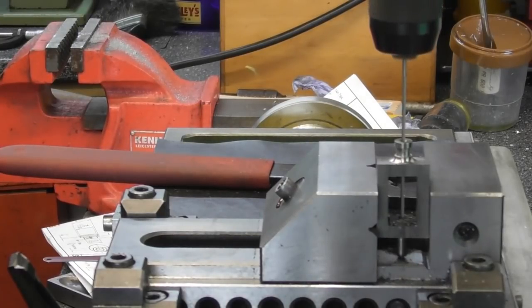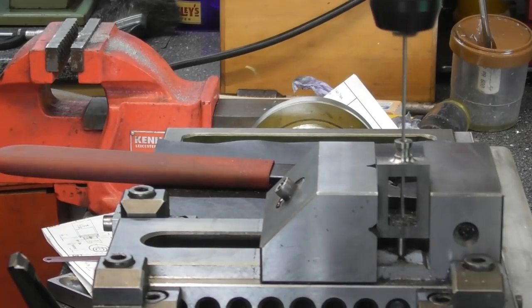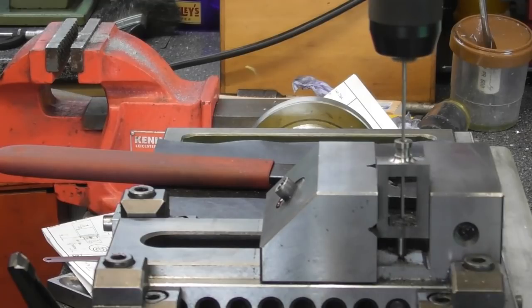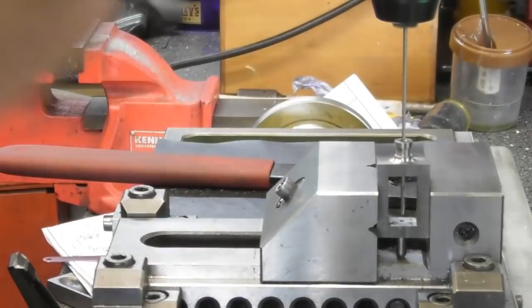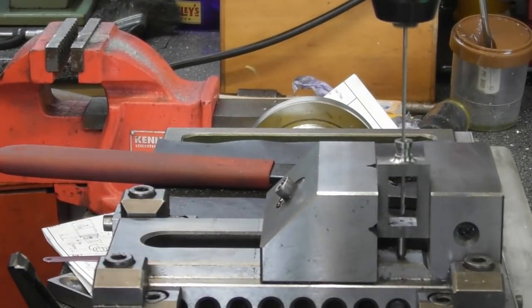I'm taking this very gently, 400 deep. So bear in mind this is a 70 thou drill and I'm going 468 thou deep. That's 450 and 469, there we go. So that's that tiny little hole done.